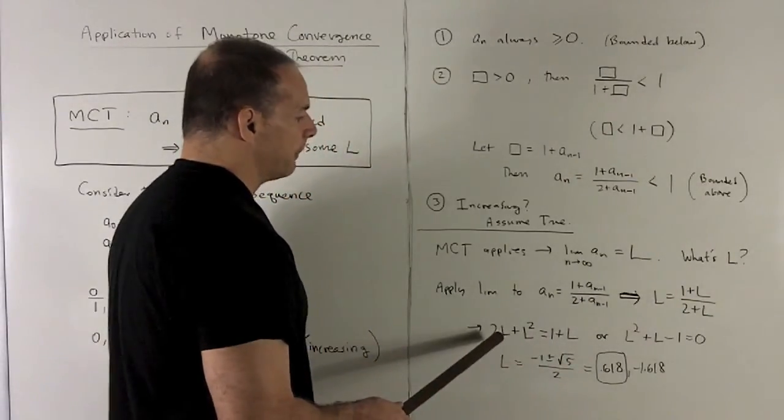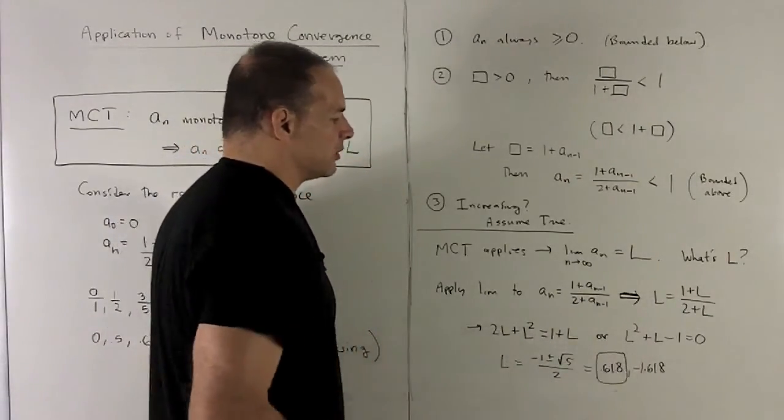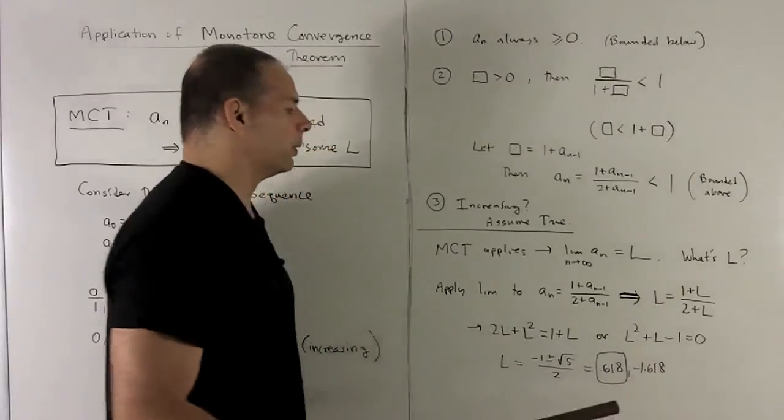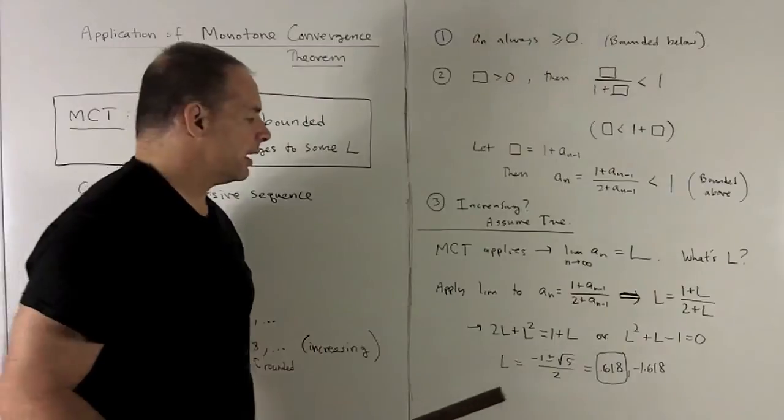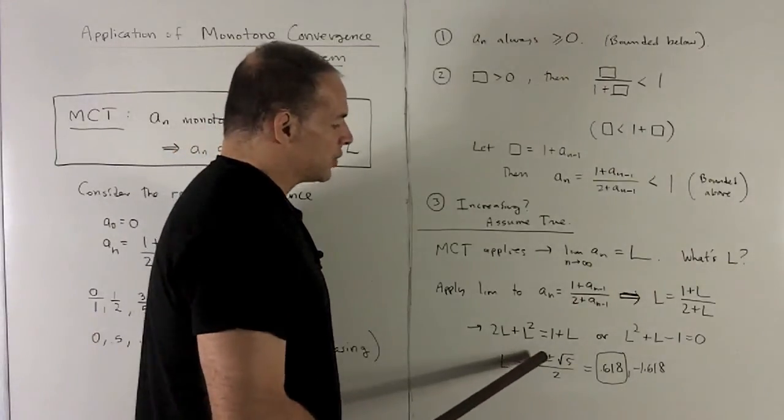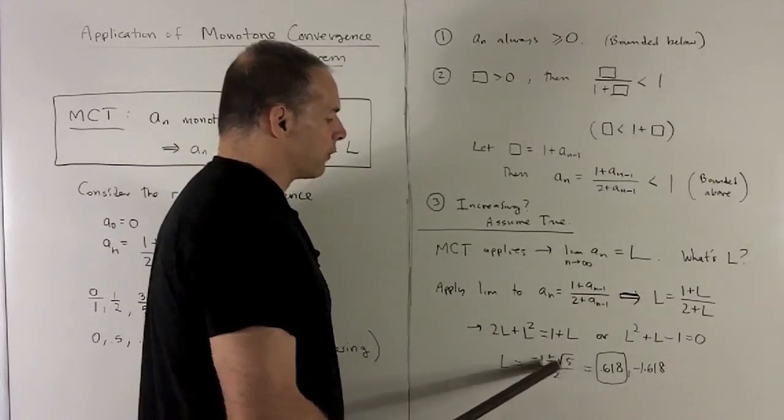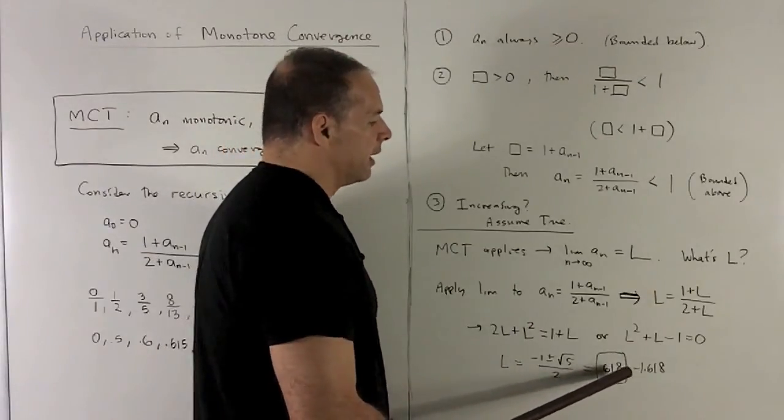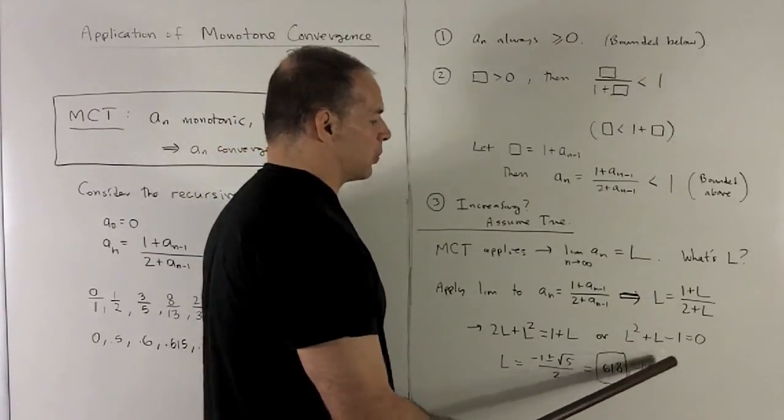I clear the denominator, and then I put everything on one side which gives me the equation L squared plus L minus 1 equals 0. I solve that. That gives me minus 1 plus or minus radical 5 over 2. And the two answers that come out are 0.618 and minus 1.618.